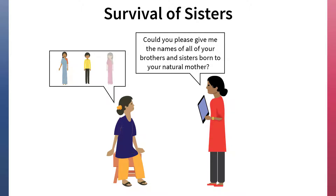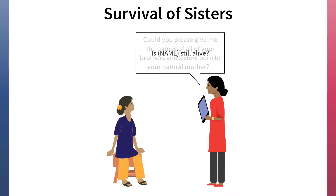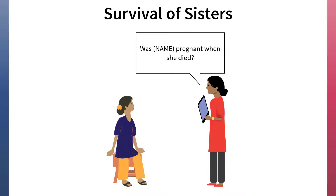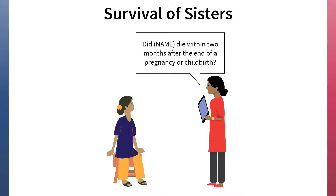Women interviewed in DHS surveys are asked to list their siblings and then asked about the survival status of all their siblings. In the case of sisters who have died at age 12 or older, the interviewer inquires whether or not the sister died during pregnancy, childbirth, or within the two months following delivery or end of pregnancy.